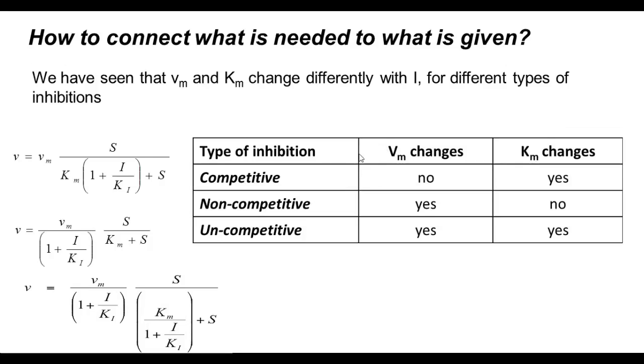The type of inhibition: competitive, non-competitive, uncompetitive. In the case of competitive inhibition, Vmax remains the same, there is no change, whereas Km changes. In the case of non-competitive, Vmax changes but Km does not change.